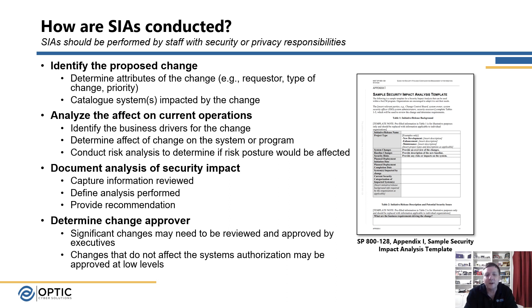You can then determine if the change is within the organization's risk tolerance levels. If the risk is very low, you might go back to the system owner to confirm it is acceptable. However, if the risk is very high — for example, if it may impact users outside of that one system — you might need to escalate to the CIO or CISO so they understand the change and can provide approval before it is implemented.